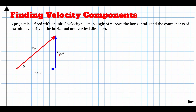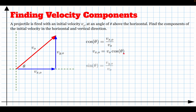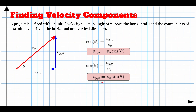So we need to find those two components because we're going to use them in our solution. Using cosine, the adjacent side divided by the hypotenuse equals the cosine of the angle. Multiplying both sides by v-zero gives us the horizontal component: initial velocity times cosine of the angle. Similarly, sine of the angle gives us the vertical component: initial velocity times sine of the angle. These two formulas are in your toolbox for finding initial velocity components in x and y.